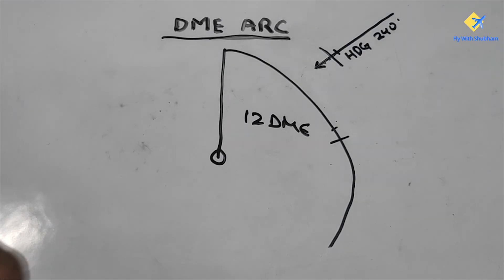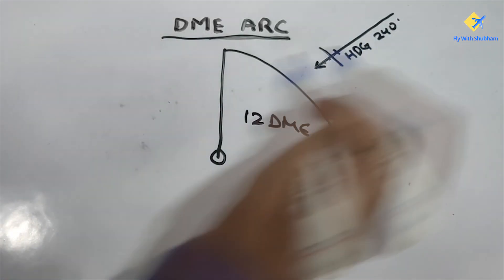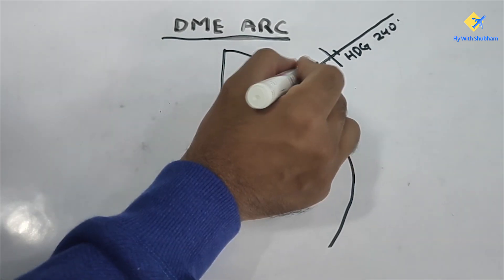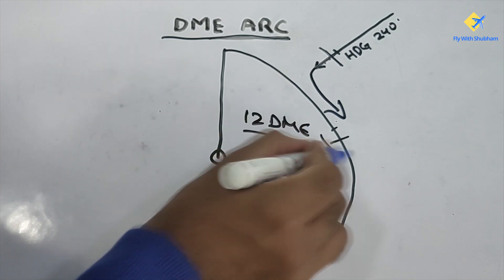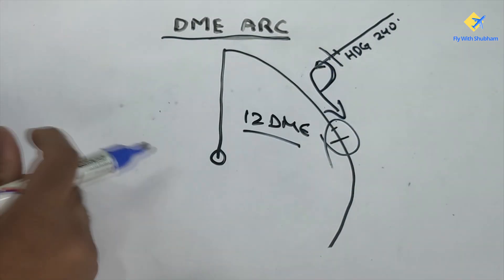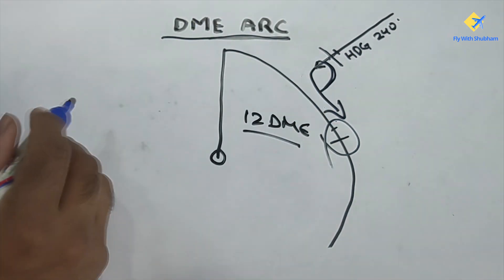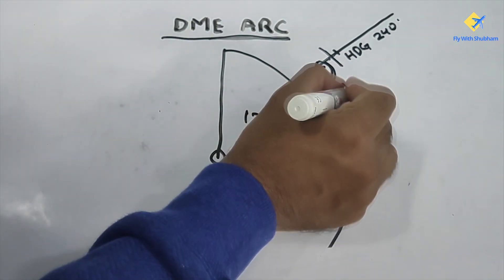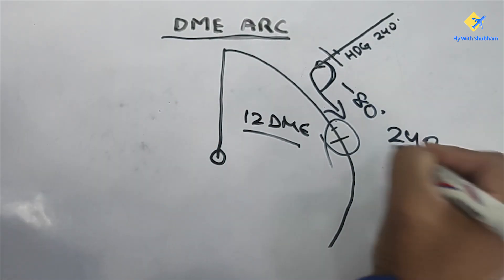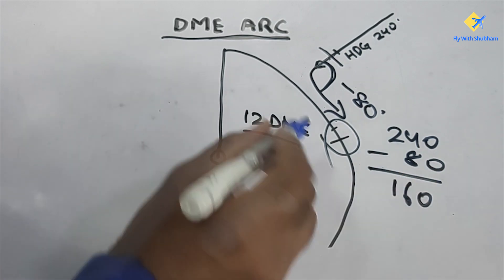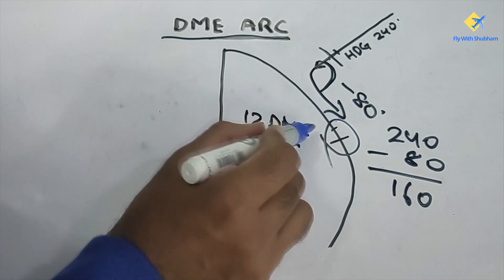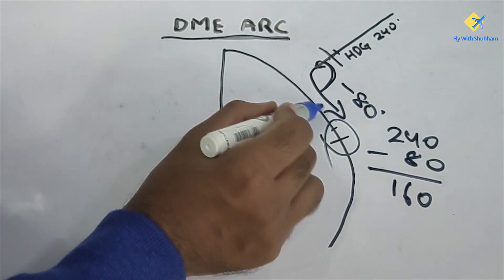Let's take an example where you are coming inbound towards the station on a heading of 240 and you have to intercept this 12 DME arc. You are turning left as per the procedure to join the DME and get established. You turn by minus 80 degrees from your current heading — so 240 minus 80 gives you 160. You turn left while approaching the DME arc to establish yourself on a heading of 160 and then follow the arc.